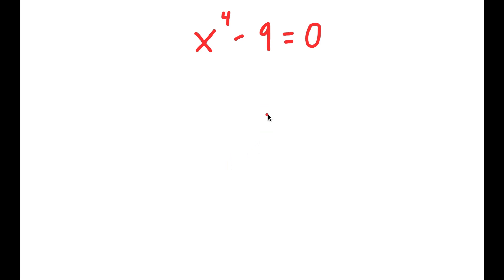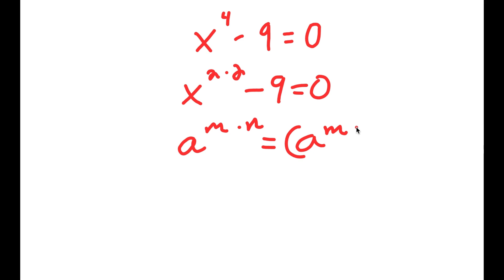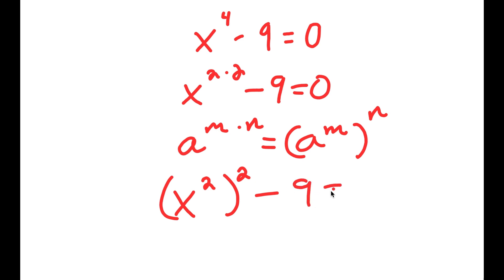In this problem, I have x to the power of 4 minus 9 is equal to 0. I'm going to first start by rewriting x to the power of 4 as x to the power of 2 times 2. If I have something in the form a to the power of m times n, this is equal to a to the power of m to the power of n. So x to the power of 2 times 2 equals x squared to the power of 2, minus 9 is equal to 0.